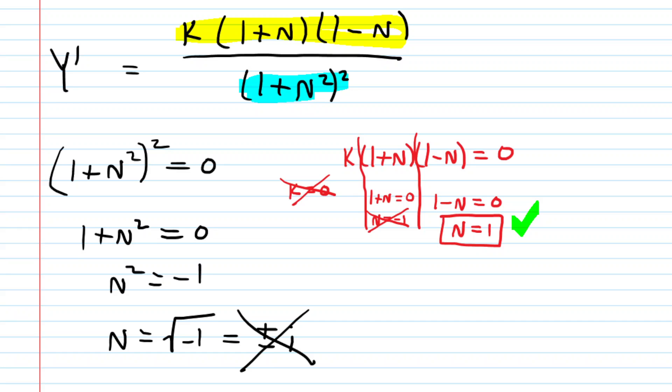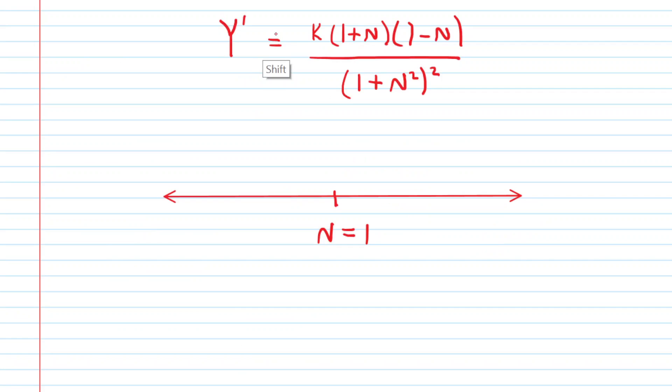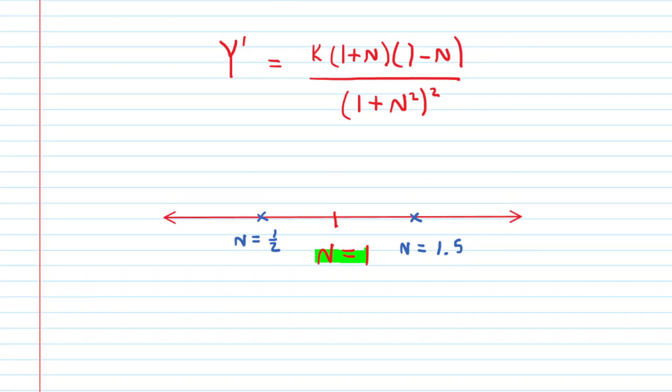Let's make sure that indeed maximizes yield by looking at the first derivative test. On the first derivative test, we take our critical number, plot it on a number line, and pick a value less than and greater than that critical number. We could choose N equals 1/2 and N equals 1.5. We can take a shortcut because the derivative is split up into factors. k is positive. The denominator squared must be positive. 1 plus N is also positive. So the only factor that can vary in terms of positive and negative is 1 minus N.